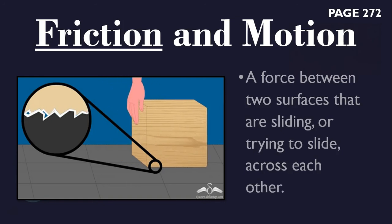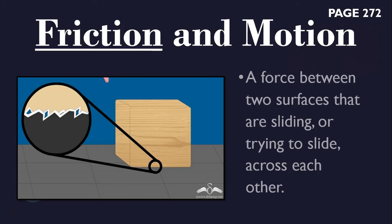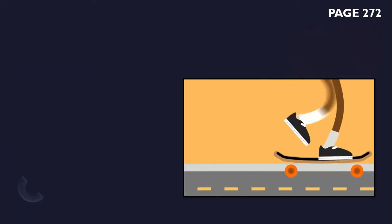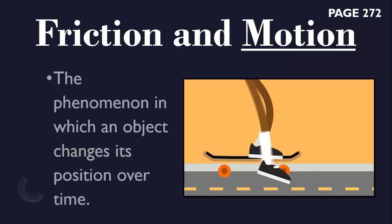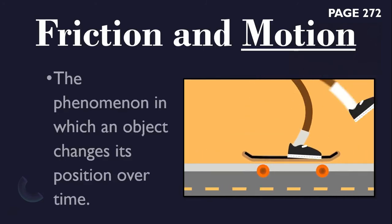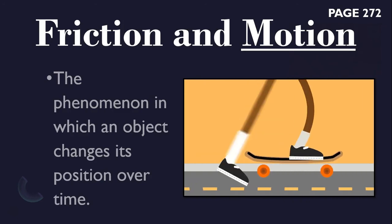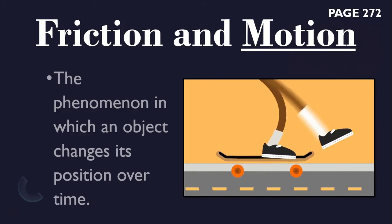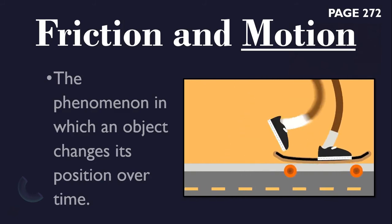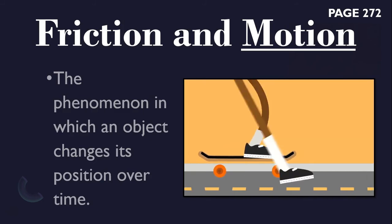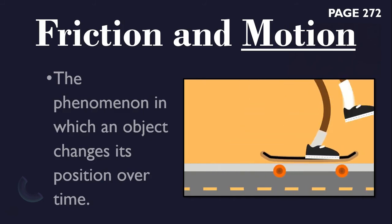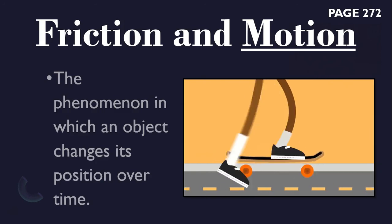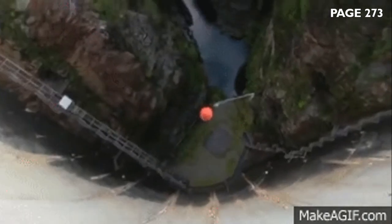This is the reason why wet floors are very slippery. Friction increases with the mass of an object. A loaded box creates greater friction than an empty box when it slides on the floor. Motion is the phenomenon in which an object changes its position over time. Friction does not only oppose motion, it also produces heat when you rub things together.